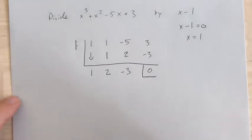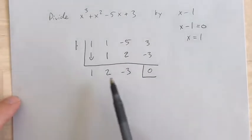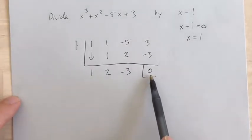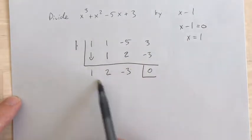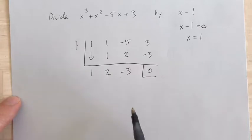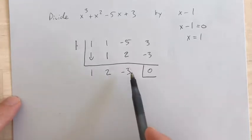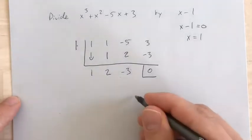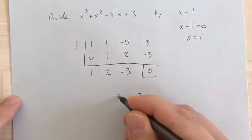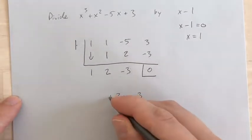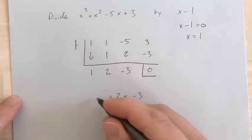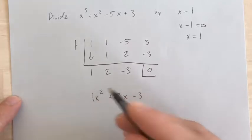Now, a few of you guys have been asking: when I write this final answer, do I need to include this over the whole x minus 1 part? And the answer is no. This would just become your answer. So the answer to this problem is going to be x squared plus 2x minus 3.